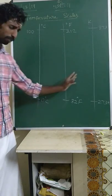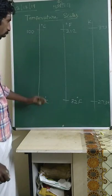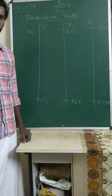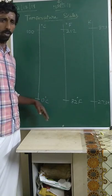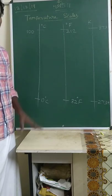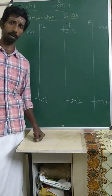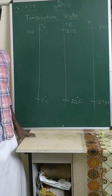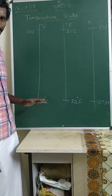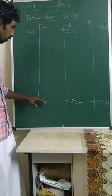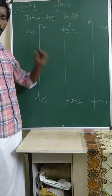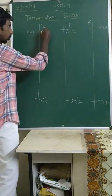Now let us see the difference between the three scales. We use zero to one hundred because water is a standard substance. The freezing point of water is 0°C and the boiling point is 100°C at standard atmospheric pressure — which is 1 atmosphere, equal to 10⁵ Newton per meter squared. Similarly, in the Fahrenheit scale the freezing point is 32°F and the boiling point is 212°F.